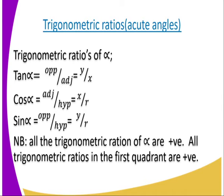Let us take an example. Alpha is in the first quadrant. When we take the opposite and adjacent of alpha, you get tan alpha which is y divided by x, and these values are positive. Cos alpha is adjacent over hypotenuse, which is x over r. And sin alpha is opposite over hypotenuse, which is y over r. That is why all the trigonometric ratios of alpha in the first quadrant are positive.